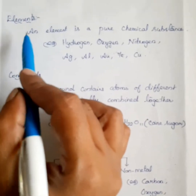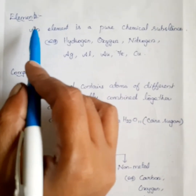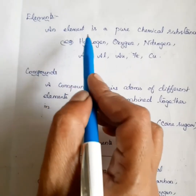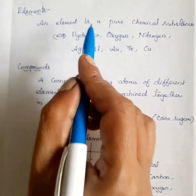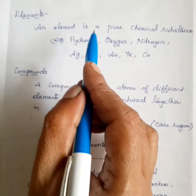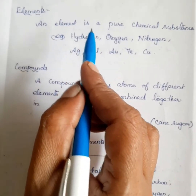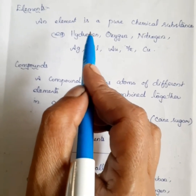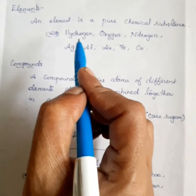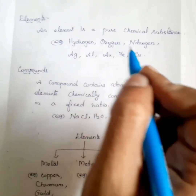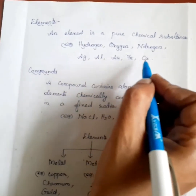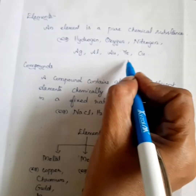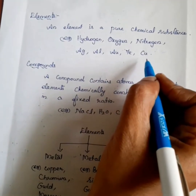Now we discuss about the element. An element is a pure substance that cannot be broken into simpler substances. All substances on earth are made up of certain simple substances called elements. Elements are the building blocks of all material. Examples include hydrogen, oxygen, nitrogen, silver, aluminium, gold, iron, and copper.